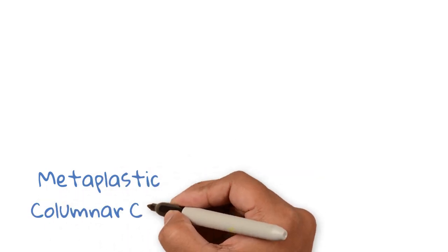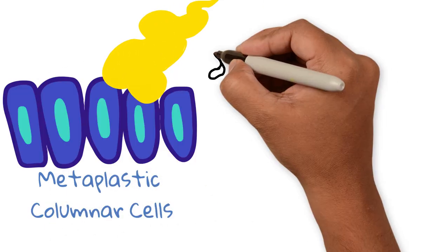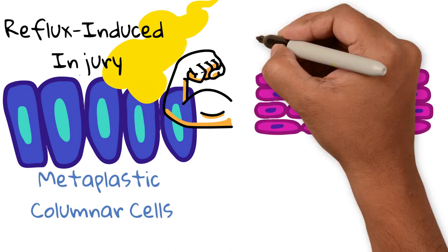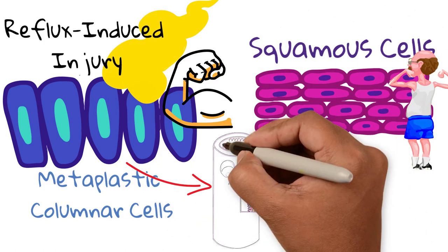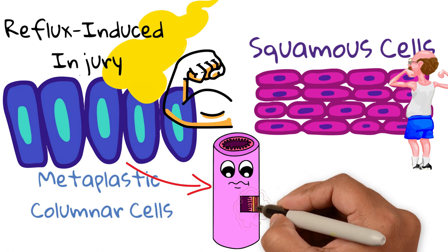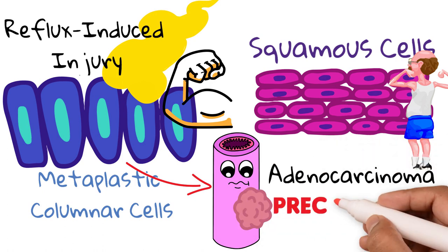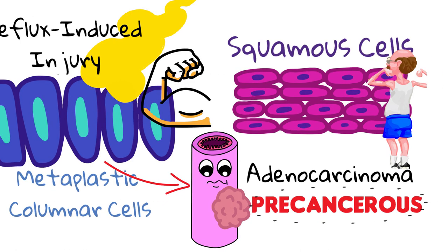The metaplastic columnar cells of Barrett's esophagus are more resistant to reflux-induced injury than the normal squamous cells. However, these metaplastic cells predispose to the development of esophageal adenocarcinoma. That means Barrett's esophagus is a precancerous lesion, so it's very important to diagnose it.